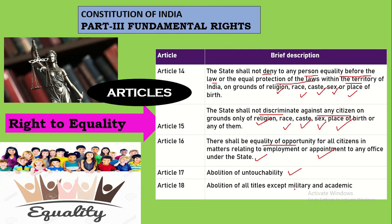Article 18 deals with the abolition of titles like Sir and Rav Bahadur, which were titles given during the period of British rule. Those titles were abolished completely. However, you can retain military titles such as Colonel, General, and Major, and academic titles such as Doctorate and Professor.